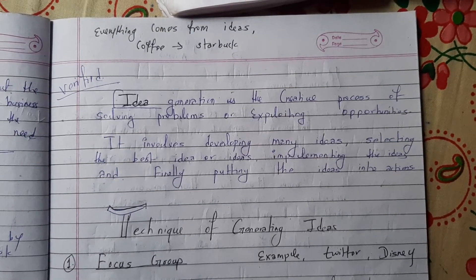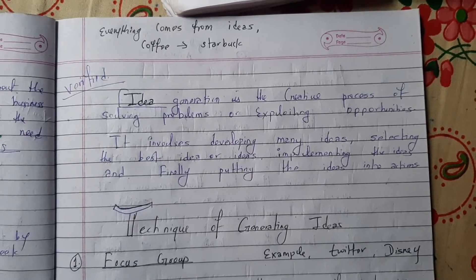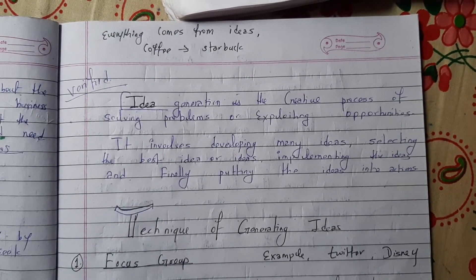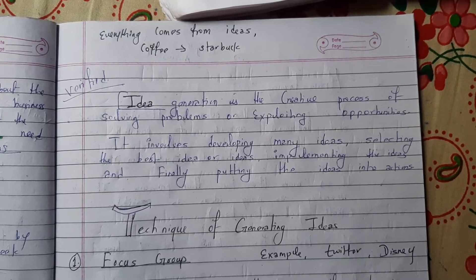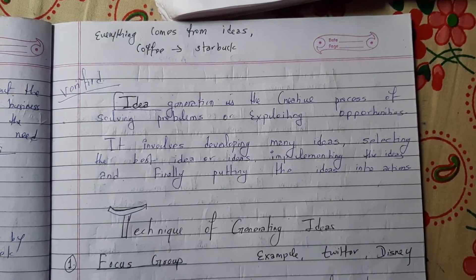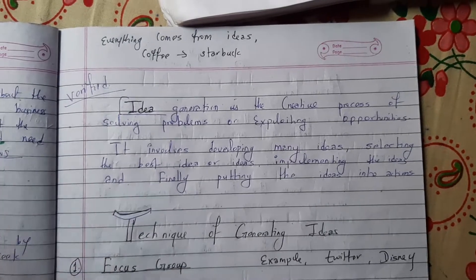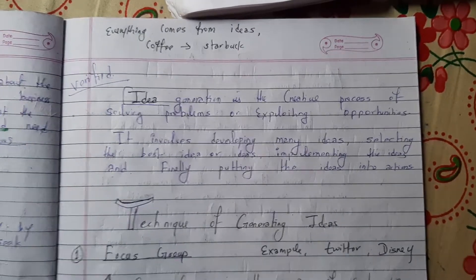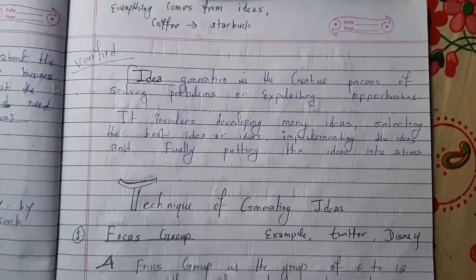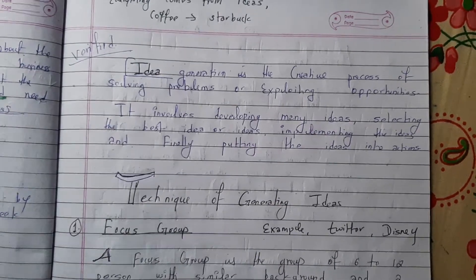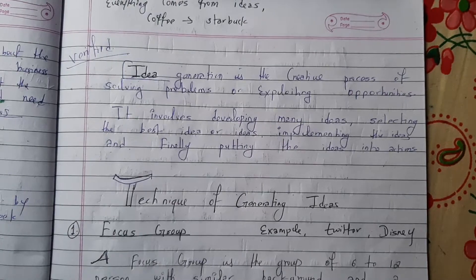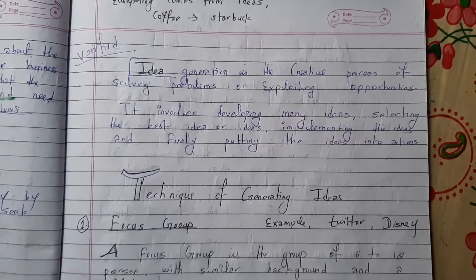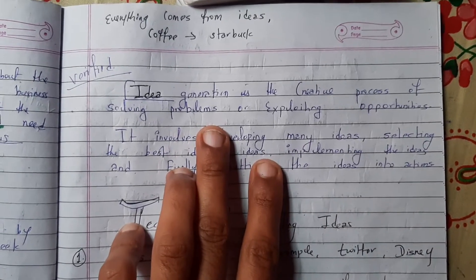Hello everyone, today we will be learning about idea generation and the techniques of generating ideas. Idea generation is the creative process of solving problems or exploiting opportunity. It involves developing many ideas, selecting the best idea or ideas, implementing the ideas, and finally putting the idea into action. Everything comes from ideas — the better the idea, the better the business. You can name it: Amazon, Alibaba, Microsoft — they all come from ideas.